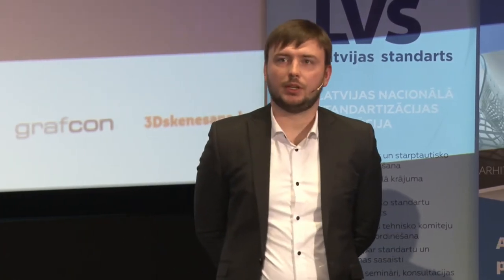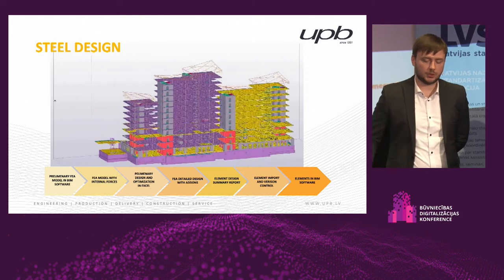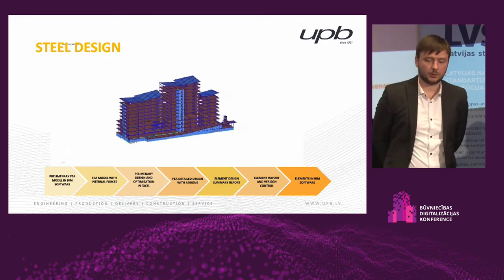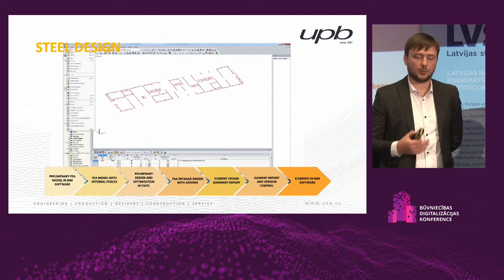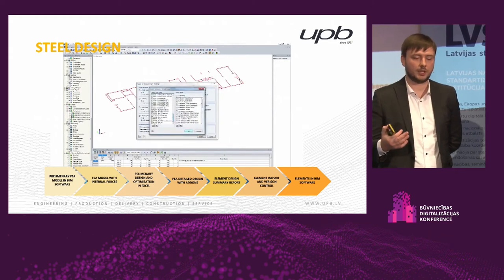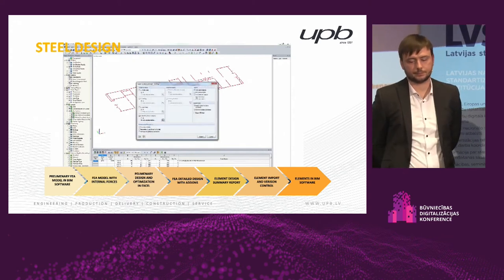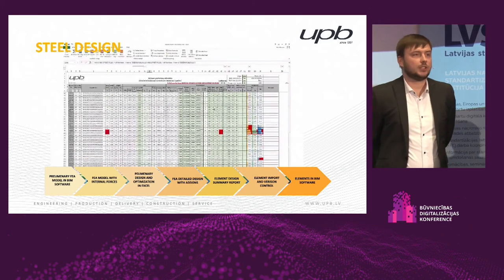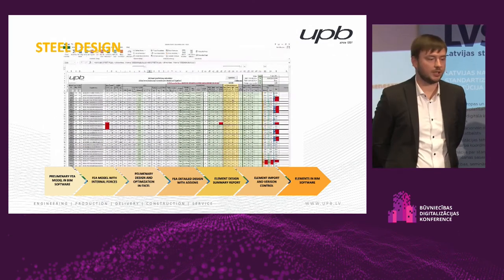Now we'll show a simple workflow in steel design. First we have a rough BIM model which is prepared for FEM software. Then we have a preliminary FEM model — a physical representation of the building with all loading and internal forces. We prepare all this information for exporting — not one element, but the whole floor or even the whole building. This gives us a preliminary steel element design spreadsheet.